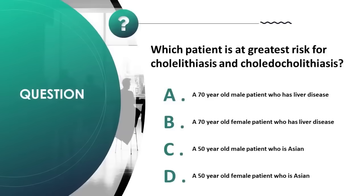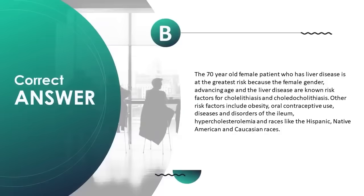Which patient is at greatest risk for cholelithiasis and choledocholithiasis? A) 70-year-old male with liver disease, B) 70-year-old female with liver disease, C) 50-year-old male who is Asian, D) 50-year-old female who is Asian. Correct answer is B. The 70-year-old female with liver disease is at greatest risk because female gender, advancing age, and liver disease are known risk factors.